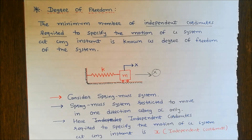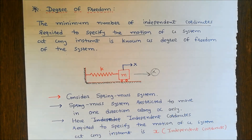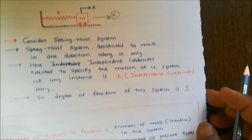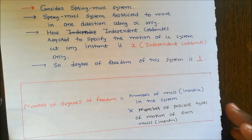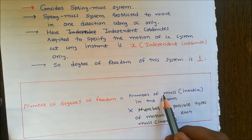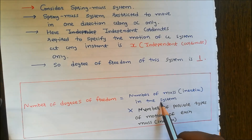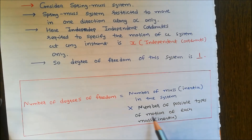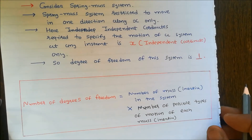We can also write the equation: the number of degrees of freedom is given by the number of masses in the system multiplied by the number of possible types of motion of each mass.